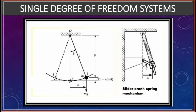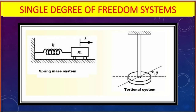Single degree of freedom systems: a pendulum has only one independent motion — rotary motion about the y-axis at an angle theta — so it has only one degree of freedom. Similarly, in a slider-crank mechanism, the crank can only rotate in one direction, so it is a single degree of freedom. A spring-mass system where mass M is attached to a spring has a single independent relative motion — translatory motion towards right or left.